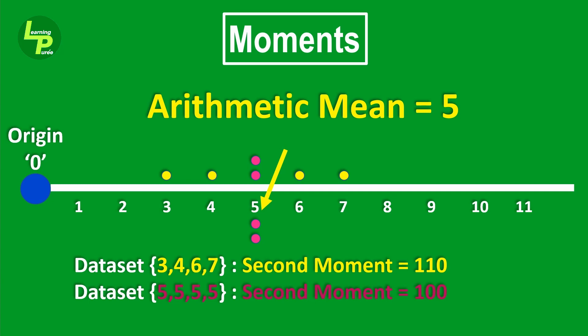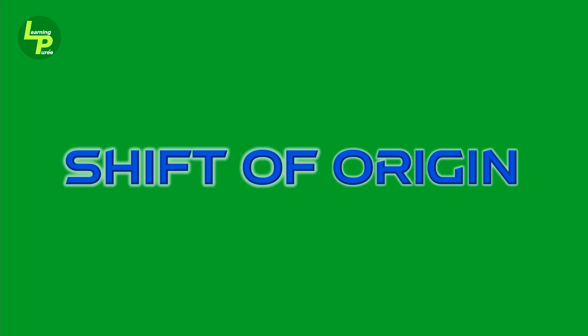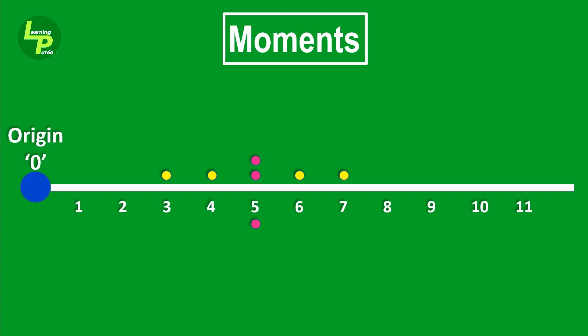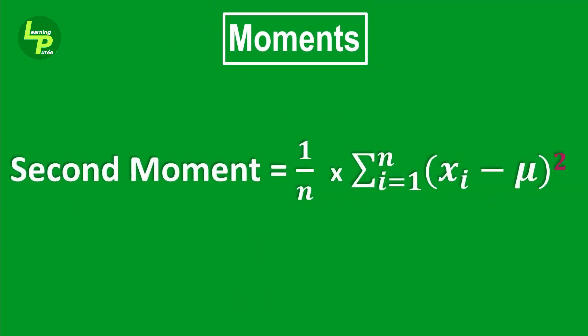One way to nullify this effect of 5 is by borrowing the concept of shift of origin from mathematics. Here we make 5 or the arithmetic mean as the origin. We will take the difference in distances from 5, the mean of the data set instead of 0 or the origin.